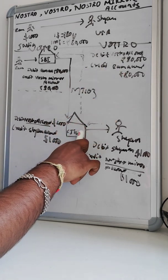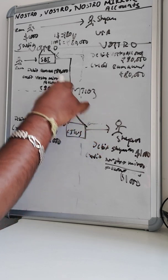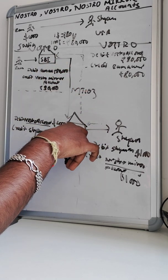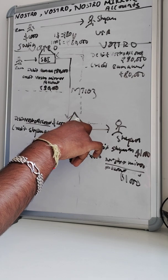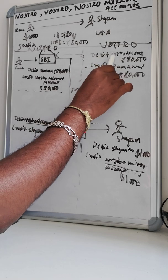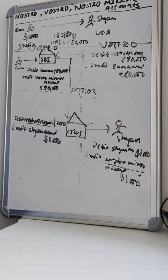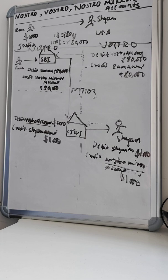So SBI will debit the Vostro account — which is the Nostro account of Citibank US maintained at SBI — and credit Ram's account with 80,000 Rupees. If there are insufficient funds, SBI will inform that the Vostro account doesn't have sufficient funds. This is all about the Nostro account, Vostro account, and Nostro Mirror account — very important to understand in the banking world because without this Nostro and Vostro relationship, direct payments and even indirect cover payments with intermediary banks would not be possible. Thank you.